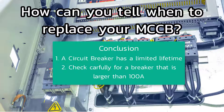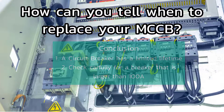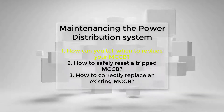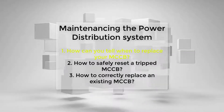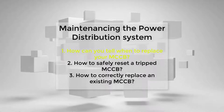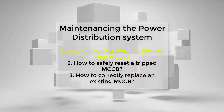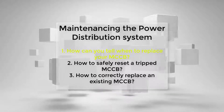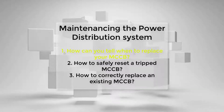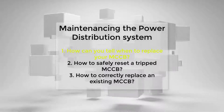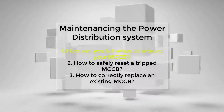To conclude, two key points: first, a circuit breaker has a limited lifetime — you cannot use it indefinitely. Second, check carefully, especially for breakers larger than 100A. In this series, Maintenance in the Power Distribution System, we have covered how to tell when to replace your MCCB. Next, we'll cover safely resetting a tripped MCCB, and lastly, how to correctly choose an MCCB to replace your existing one.